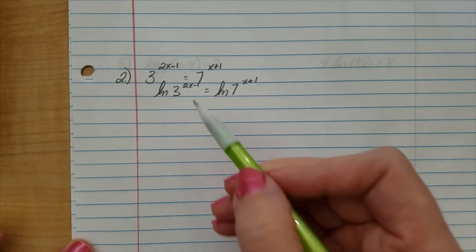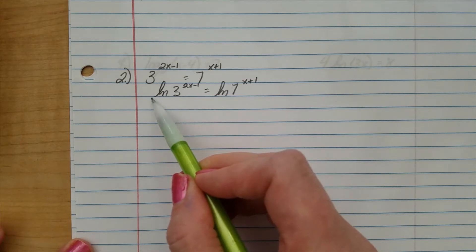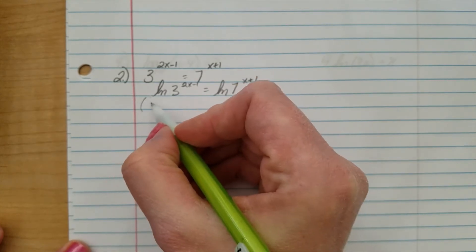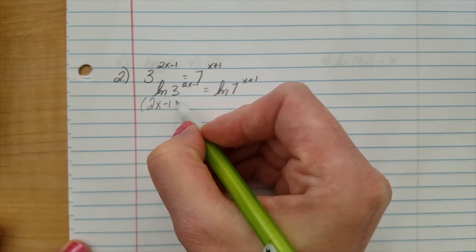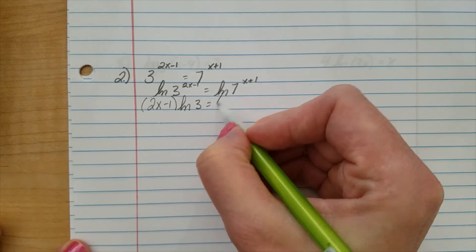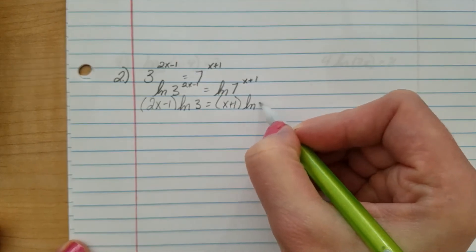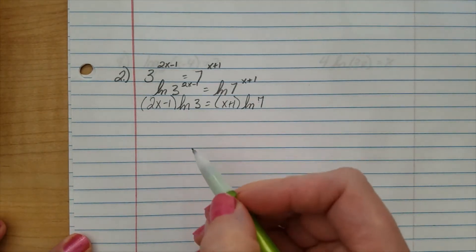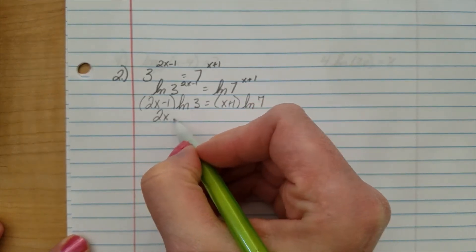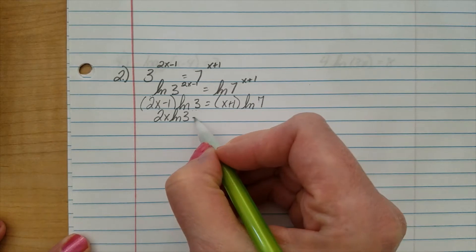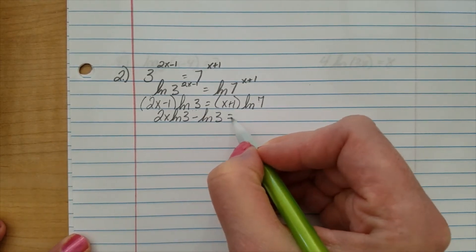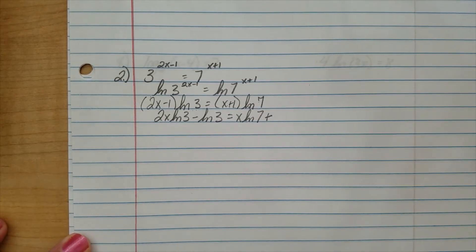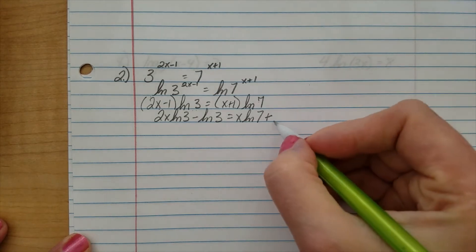Power property of logarithms. We're going to take our exponents, move it out front. Please don't forget to put parentheses around them so we do not make an error when we have to distribute. 2x minus 1 times natural log of 3 equals x plus 1 times the natural log of 7. And now, I'm going to distribute my binomial. 2x times natural log of 3. Negative 1 times natural log of 3. x times the natural log of 7. And 1. Oops. 1 times the natural log of 7.